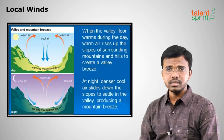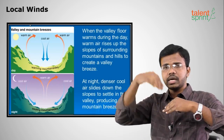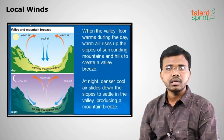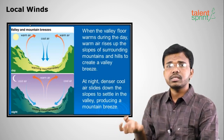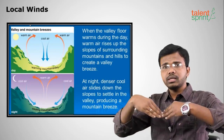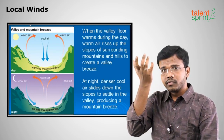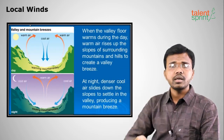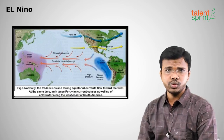Valley breeze and mountain breeze: during the day, the lower part of a valley between two mountains gets heated up first because it is directly exposed to the sun. Higher temperature means lower pressure, so the air expands and rises — this is called valley breeze, and it happens during daytime. At night, the valley floor is at lower temperature, meaning higher pressure, so the mountain breeze flows from the top of the mountain down to the bottom — this is called mountain breeze.